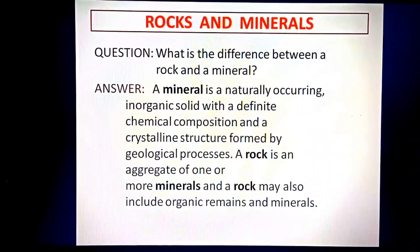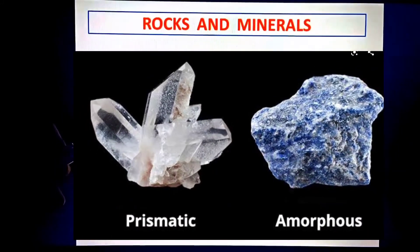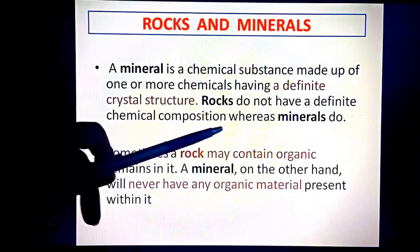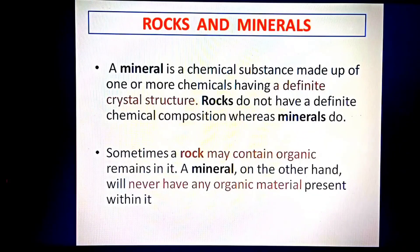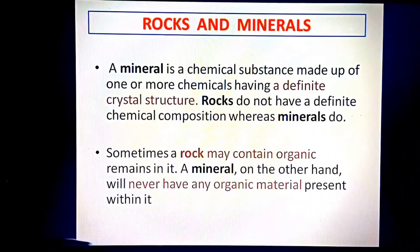A mineral is a chemical substance made up of one or more chemicals having a definite crystal structure, meaning definite chemical and physical properties. Rocks do not have a definite chemical composition, whereas minerals do. Also, a rock may sometimes contain organic remains, but a mineral will never have any organic material present within it. These are the key differences between rocks and minerals. Thank you students.